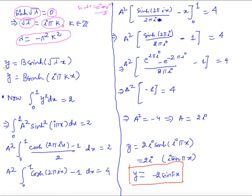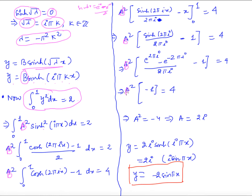With λ = −π²k², the solution becomes y = b·sinh(i·π·k·x). To find b, we use the constraint: the integral from 0 to 1 of y²·dx = 4. After integrating sinh² using the cosh identity, we get b² = −4, so b = 2i. Using the identity sinh(i·θ) = i·sin(θ), we get y = 2i·sinh(i·π·x) = 2i·(i·sin(π·x)) = −2·sin(π·x). This is the required solution.